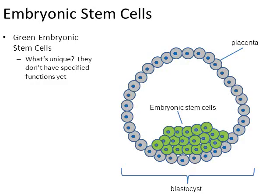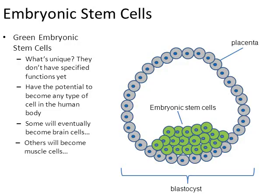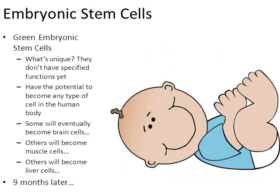What's so unique about embryonic stem cells is that they don't have specified functions yet. They have the potential to become any type of cell in the human body. As the embryo develops further, some stem cells will eventually become brain cells, others will become muscle cells, others will become liver cells. But in this early stage, they don't have specified functions yet — these are what we call stem cells. If cell division continues for nine months, the embryo grows into a healthy baby.